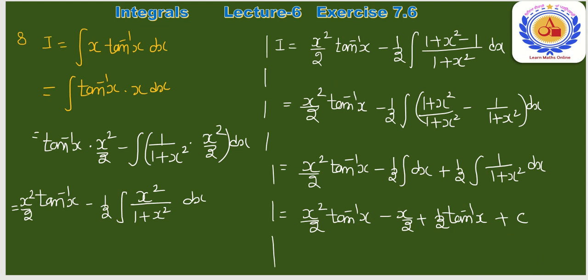Question number 8: ∫x·tan⁻¹(x)dx। Inverse trigonometric function को first function लेंगे। Formula: tan⁻¹(x)·∫x dx − ∫[1/(1+x²)·x²/2]dx = x²/2·tan⁻¹(x) − (1/2)∫x²/(1+x²)dx।